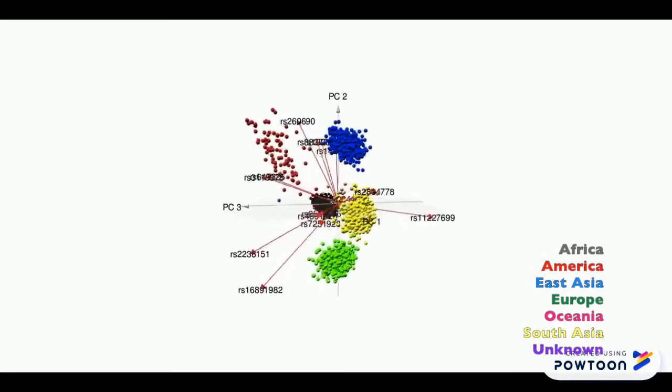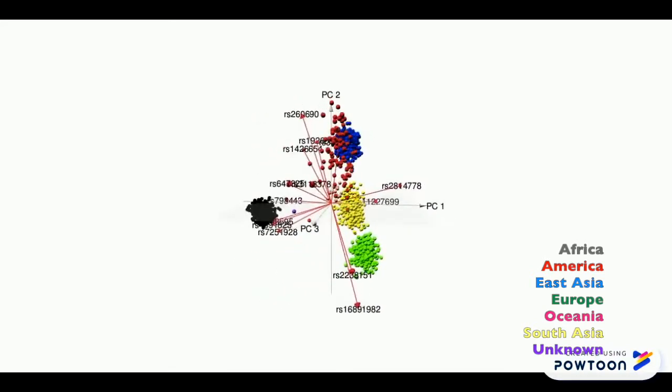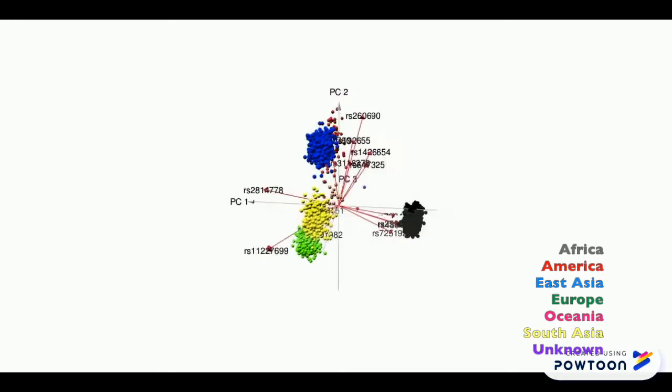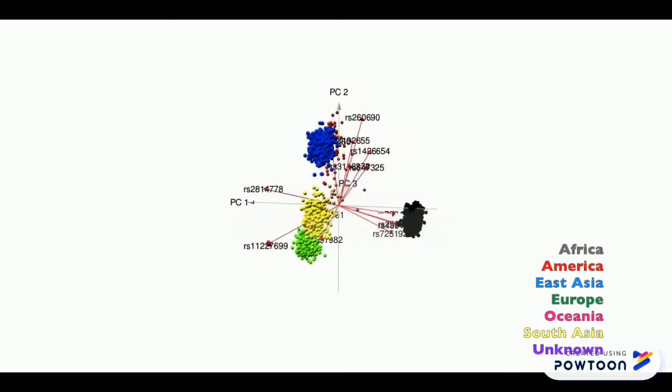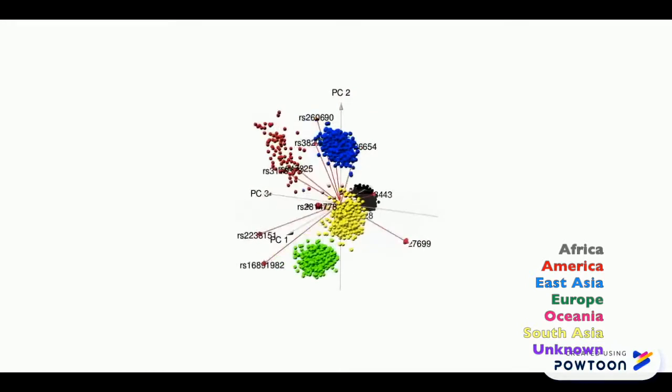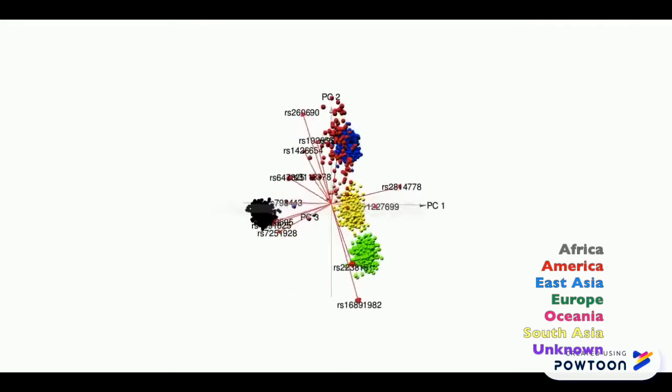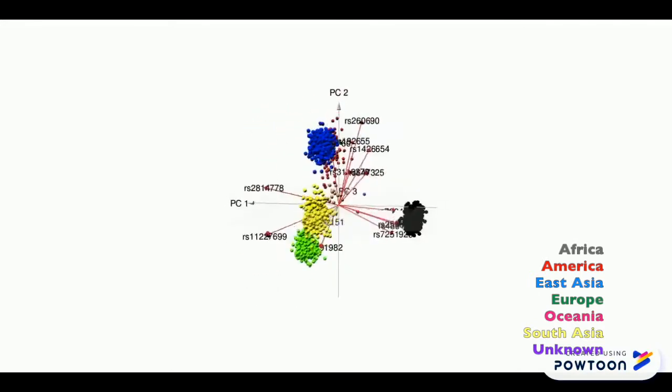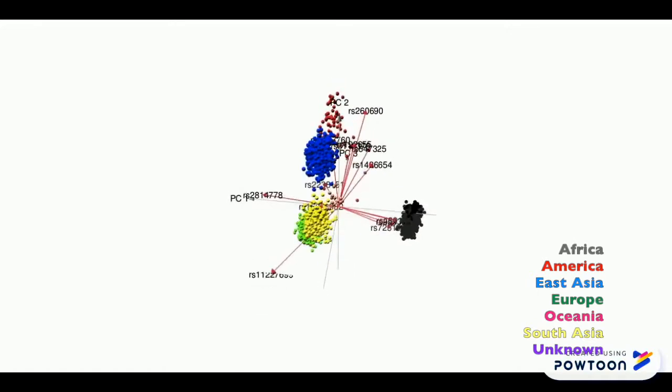Our PCA plot reveals a similar ancestry, where a PCA plot transforms a large set of correlated variables to a small set, while still containing a majority of the information within the large set. As you can see, our unknown could again be American, Oceanian, East Asian, or South Asian.